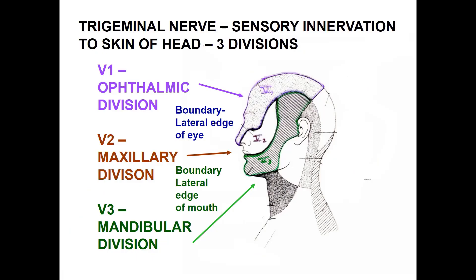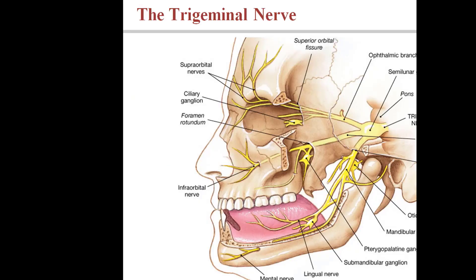Our lecture now is dealing with the trigeminal nerve. The trigeminal nerve is the sensory innervation to the skin of the head. It has three main divisions: V1 ophthalmic division, V2 maxillary division, and V3 mandibular division.